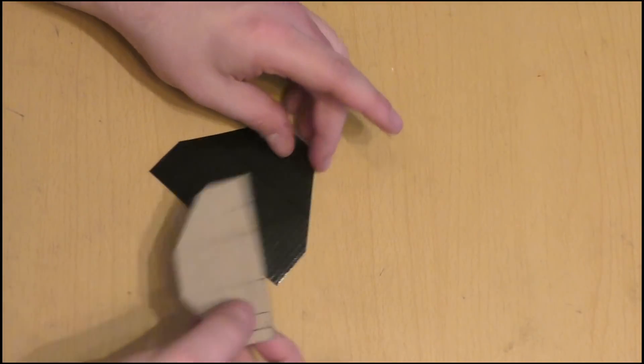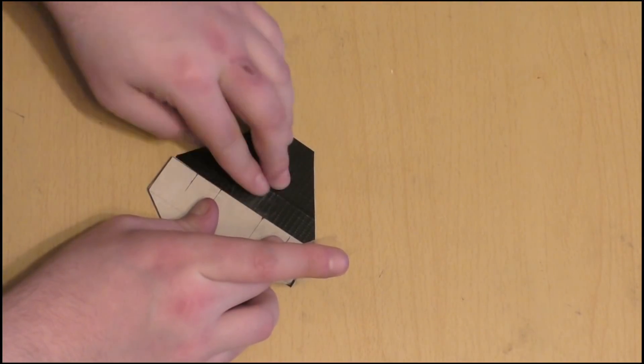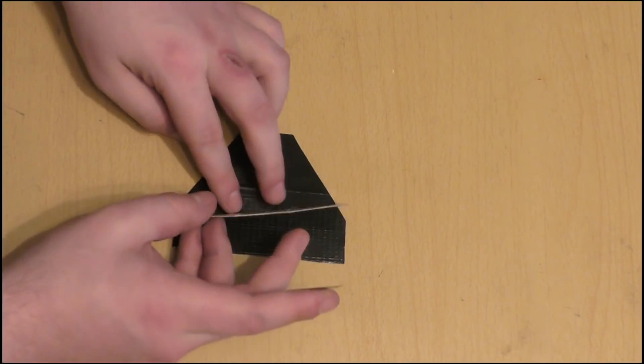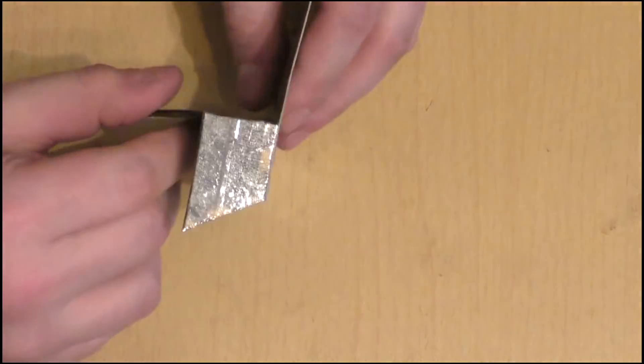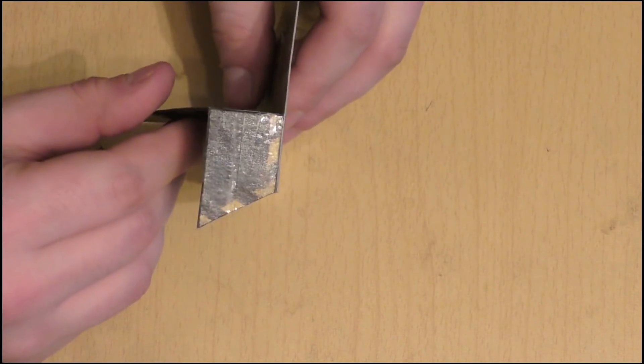And now it's time to put the model together. Start by taping the central support to the base, just at the point where the angles of the front section begin. Then add both the lower side panels, which are attached to the central support and to the base.